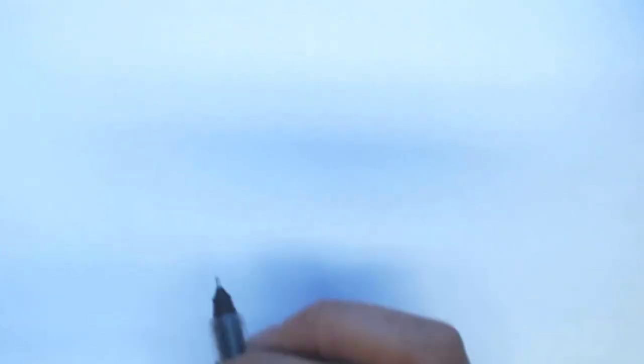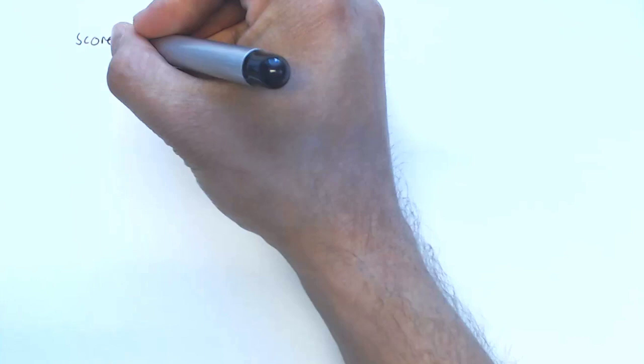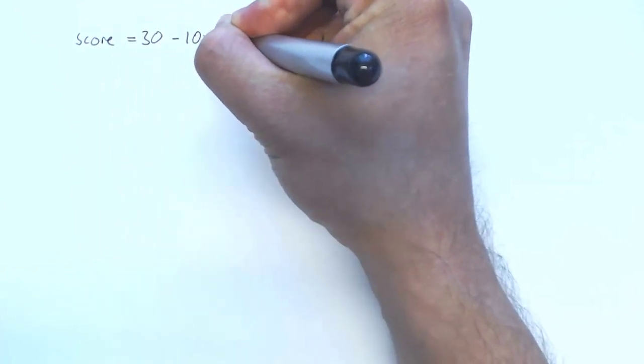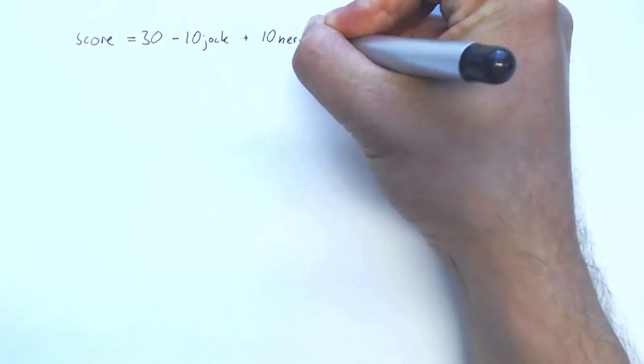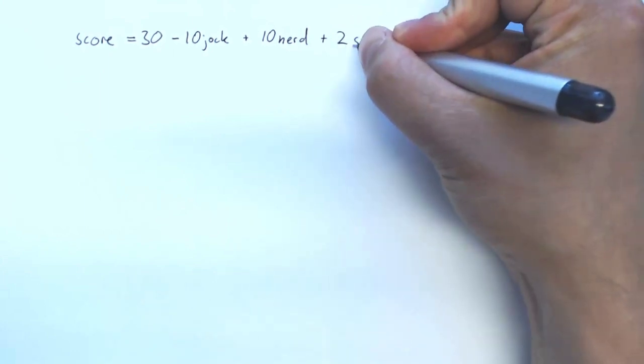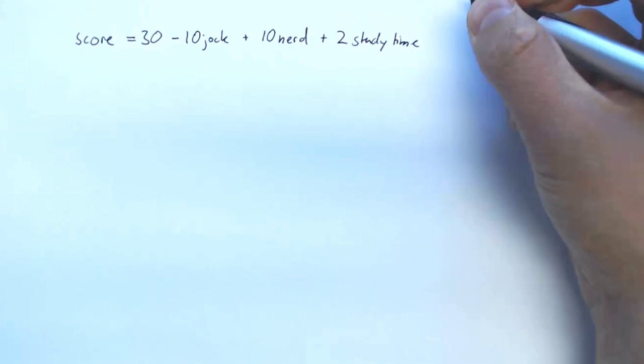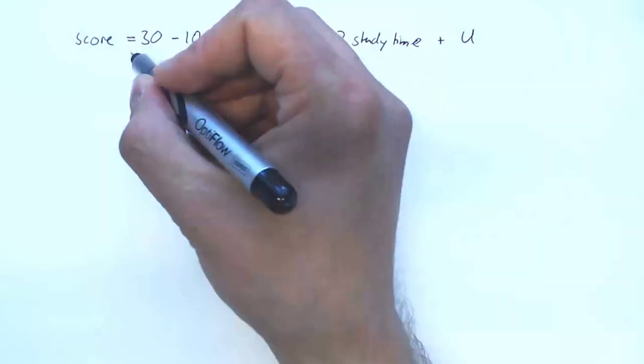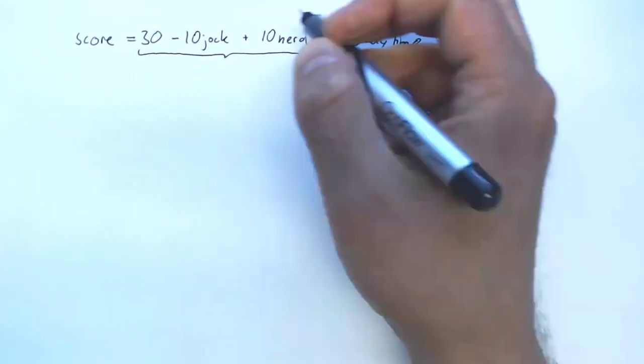Suppose that our true linear regression model is given by: score equals 30 minus 10 times jock plus 10 times nerd plus 2 times study time plus our unobserved component u. So the first part here defines a regression curve.